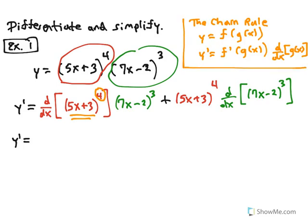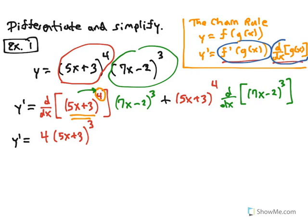Here's the chain rule: if you have a composition of two functions, to find the derivative you begin by finding the derivative of the outside function evaluated at the inside function, then multiply by the derivative of the inside function. Here the outside function is raising to the fourth power, so you use the power rule — bring the exponent 4 to the front, giving (5x + 3)^3, subtracting 1 from the exponent. Then multiply by the derivative of the inside function, which is the derivative with respect to x of (5x + 3).